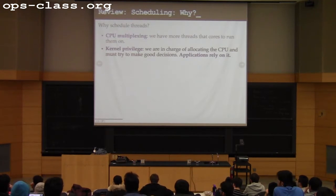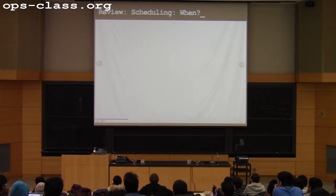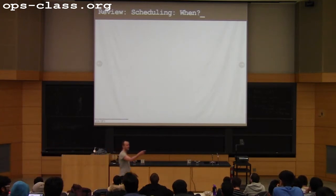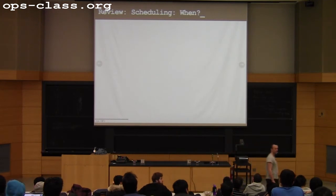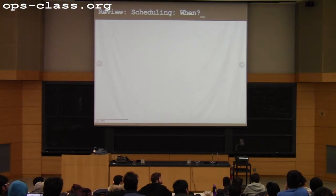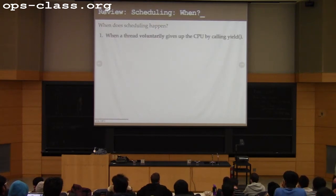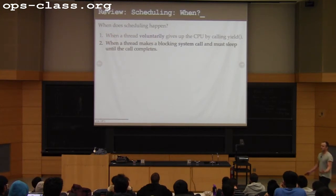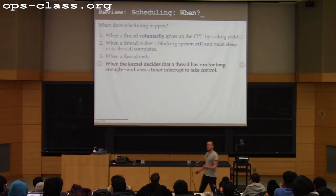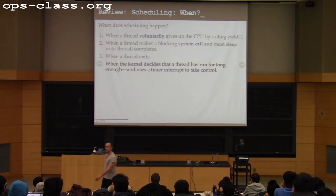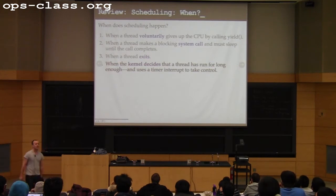The kernel is in charge of doing this because the kernel is in charge of multiplexing resources, and the kernel runs every time an interrupt fires. When does the scheduler have a chance to run? Essentially whenever the kernel runs — when a thread calls thread yield, when a thread makes a blocking system call, when a thread exits, and when a timer fires, which gives the kernel control to stop that thread and start another.